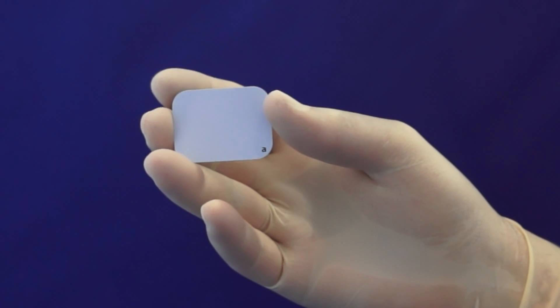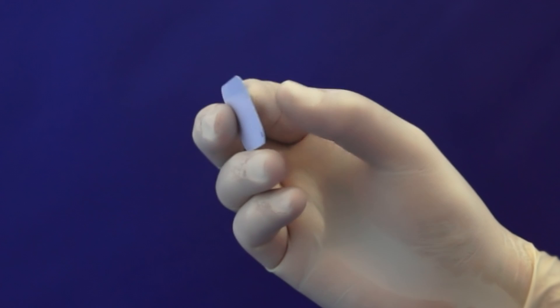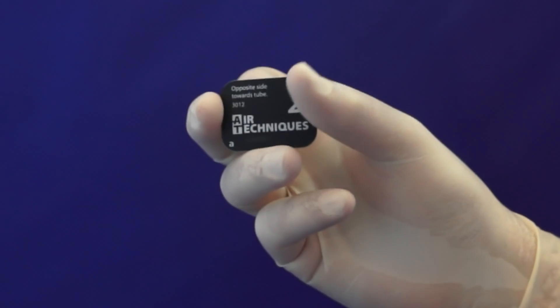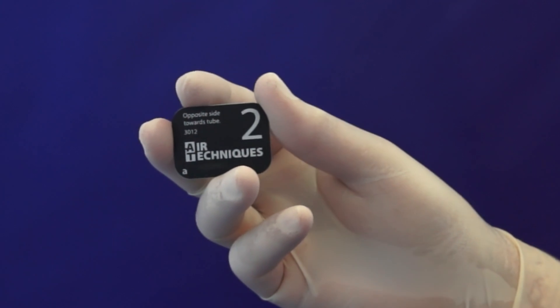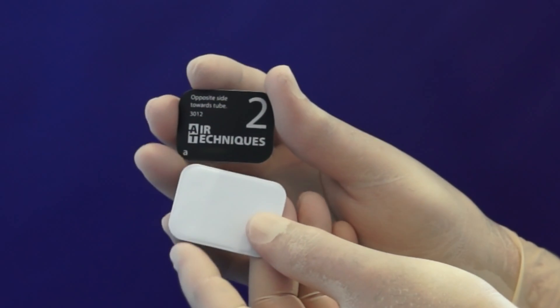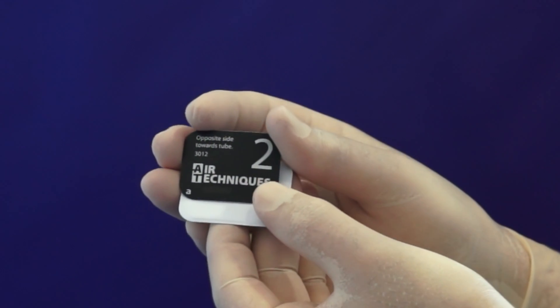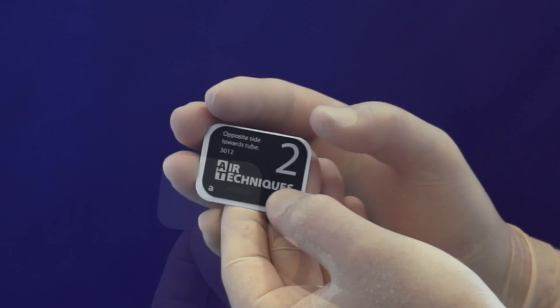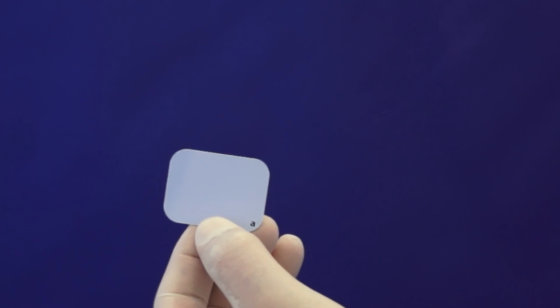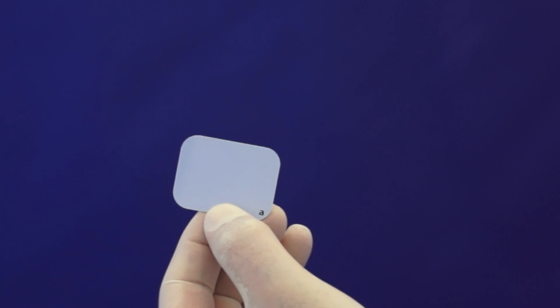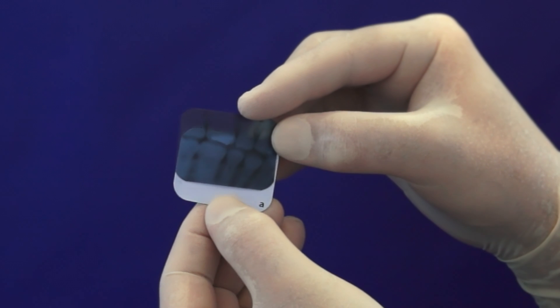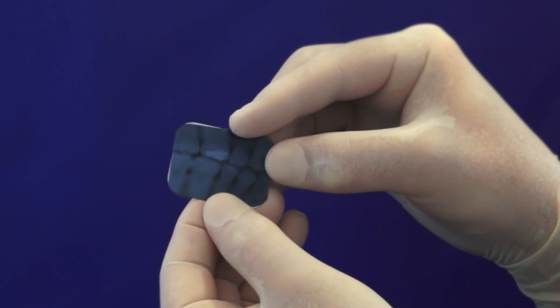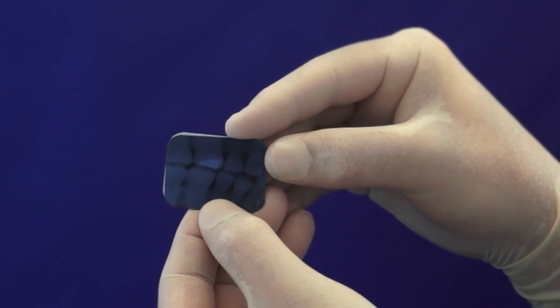The ScanX sensor is very easy to use. This is the number two size sensor, which corresponds to the traditional bite-wing film. Here is the bite-wing film size, and it's approximately the same as the ScanX sensor. In comparing the size of our phosphor plate sensors to our traditional analog films, you can actually see that the traditional bite-wing film is just about the same size as our number two ScanX sensor.